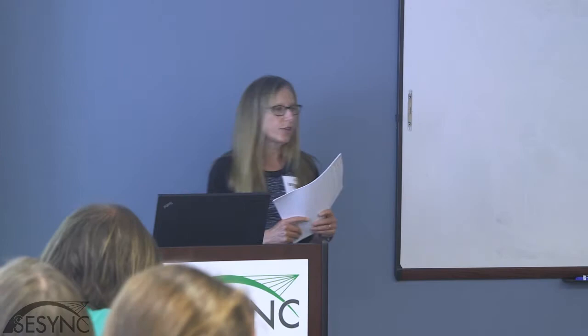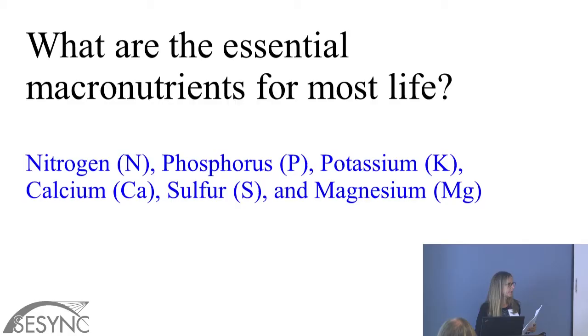Where does energy in ecosystems come from? The sun. What are the essential macronutrients for life? NPK, calcium, sulfur, and magnesium — the fundamental nutrients that most organisms need to survive. Ecosystem ecologists and biogeochemists spend a lot of time focusing on pools and flows of these nutrients in addition to carbon.